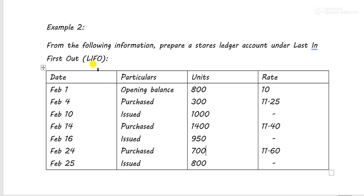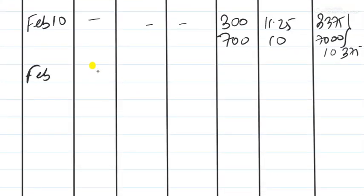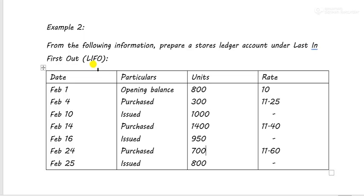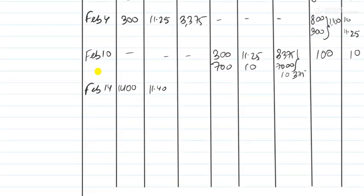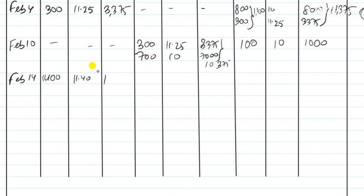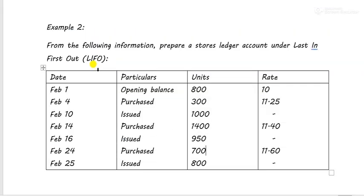On February 14 (Valentine's Day!), goods were purchased — 1400 units at 11.40 rupees. So 1400 × 11.40 = 15,960. No issues. The balance now shows 100 units at 10 (1000) and 1400 units at 11.40 (15,960), totalling 1500 units worth 16,960.